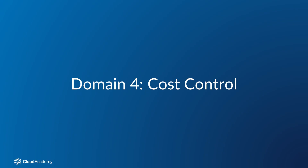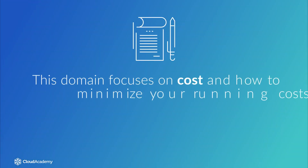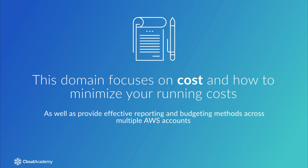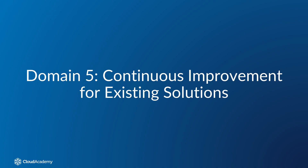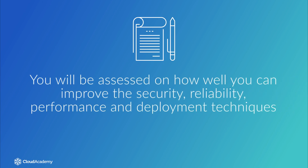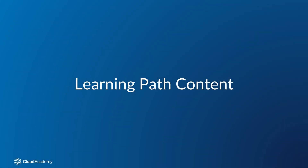Domain 4, cost control, focuses on cost and how to minimize your running costs, in addition to being able to provide effective reporting and budgeting methods across multiple AWS accounts. Domain 5, continuous improvement for existing solutions, is the second highest percentage for any domain with a 29% weighting against your exam score, so additional emphasis on these elements should be given when studying. You will be assessed on how well you can improve the security, reliability, performance and deployment techniques of existing solutions.